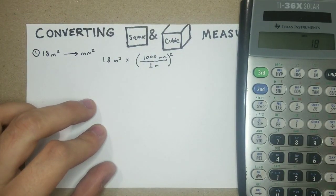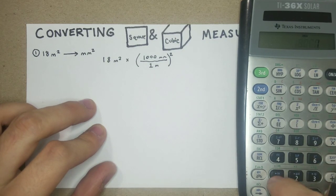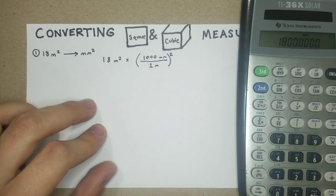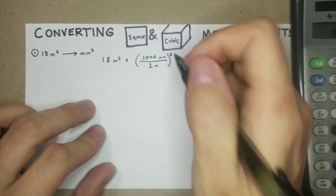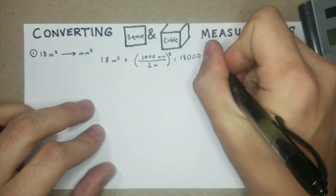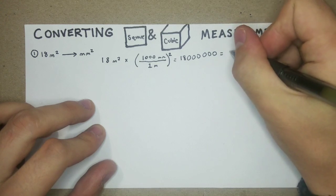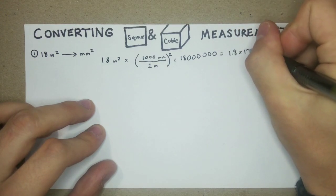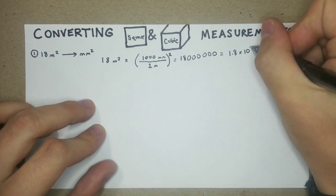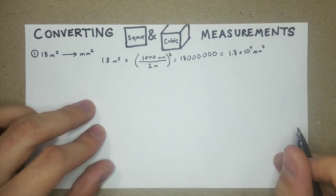So here we go, got 18 times 1,000 times 1,000. Six zeros, or we can just write 1.8 times 10 to the seventh millimeters squared. So that's not too bad.